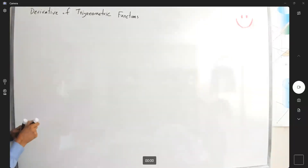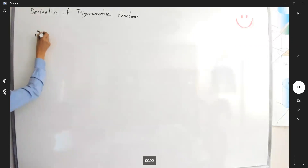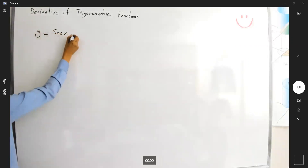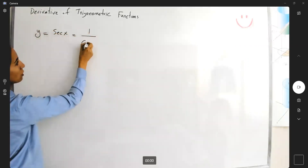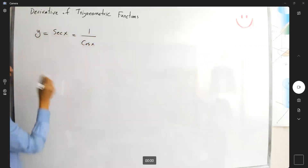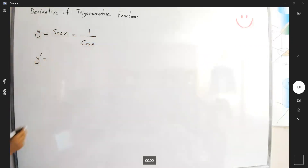Let's talk about the derivative of secant and cosecant. If y is secant of x, it can be represented as 1 over cosine of x. Now we can start taking the derivative using the quotient rule.